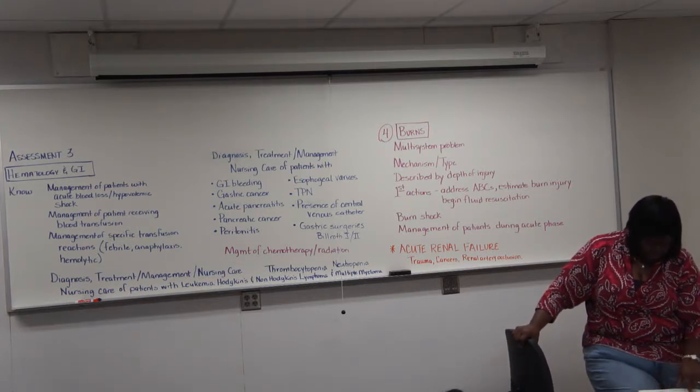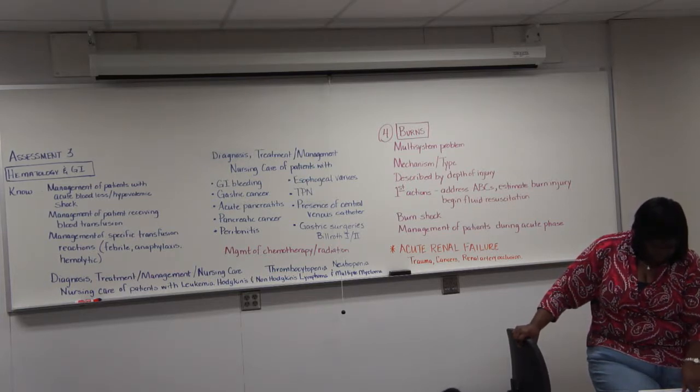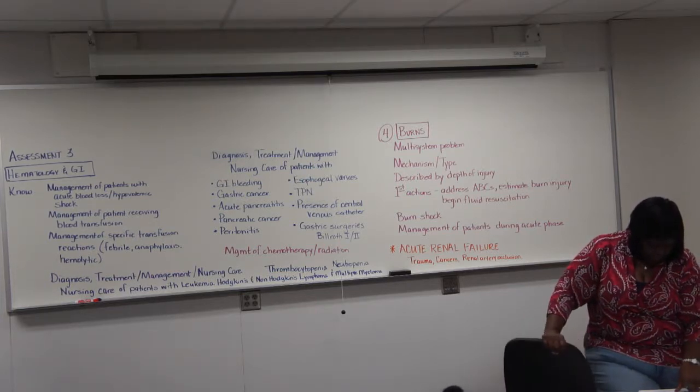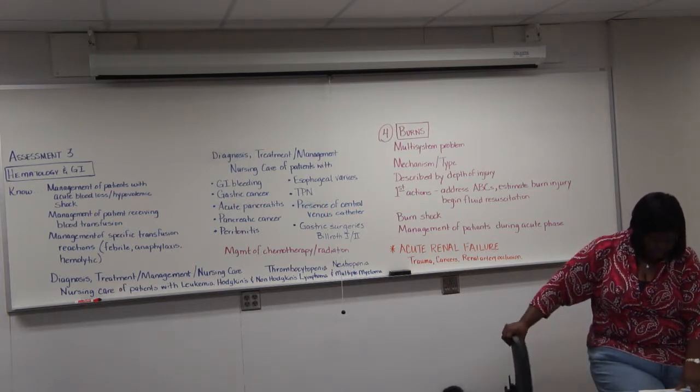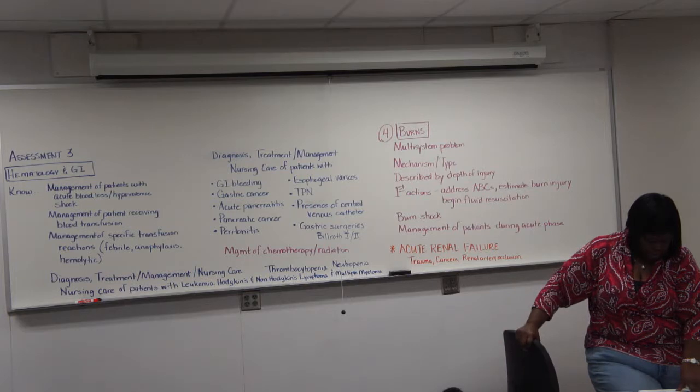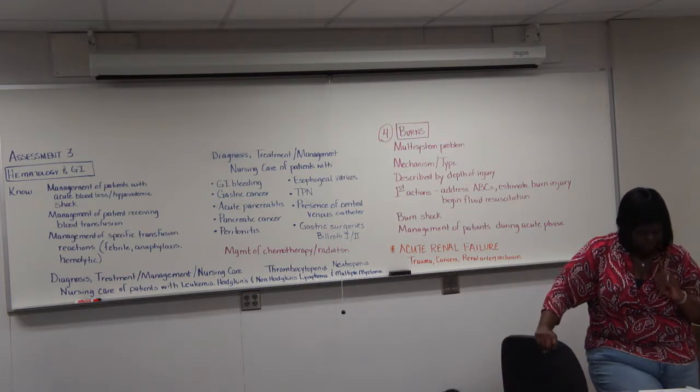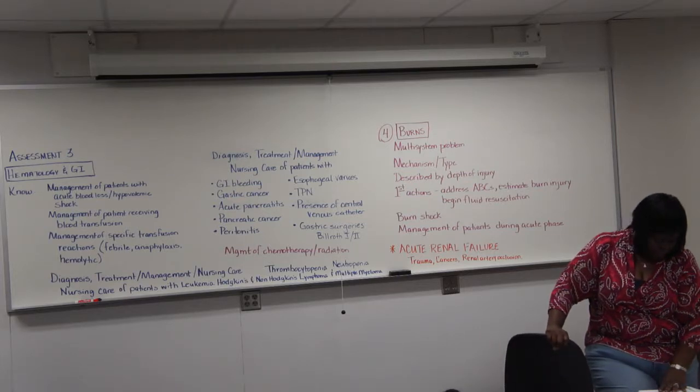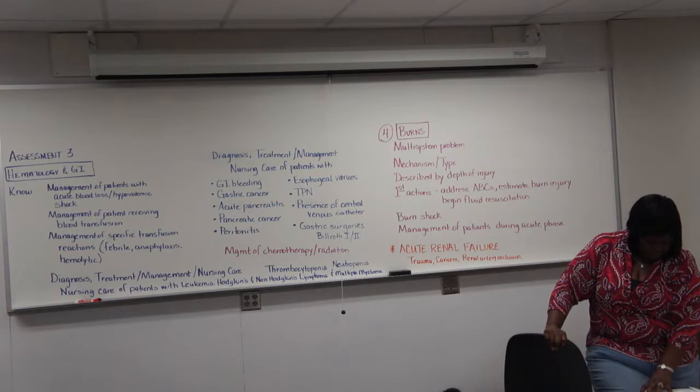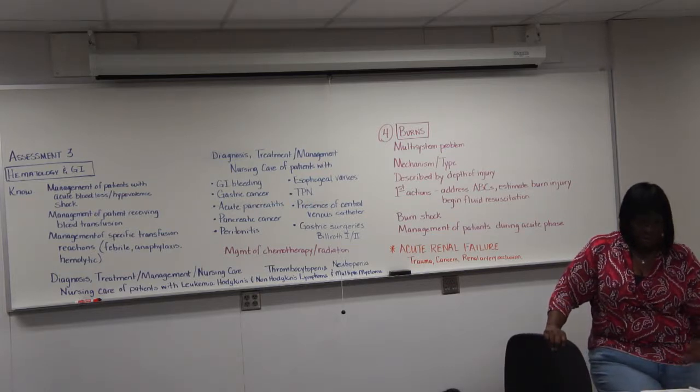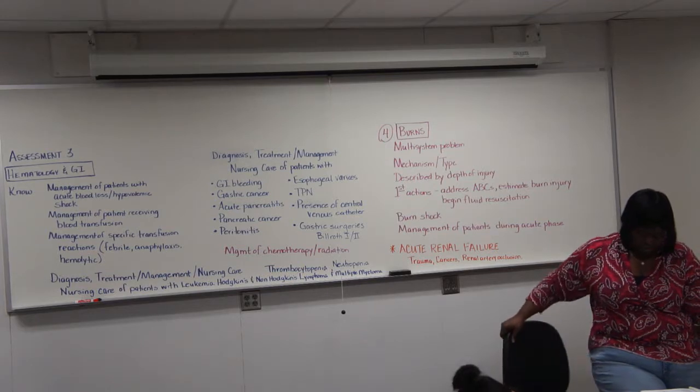And then GI, because there's some GI stuff that's spread out. Pancreas stuff is in 44. And then GI bleed is probably in 42. 47 is kidneys. They said 67. Yeah, that's going to be shock.